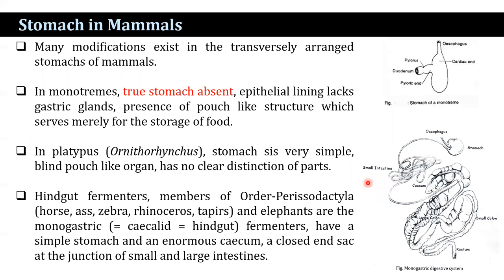Among mammals, many modifications exist in the transversely arranged stomachs. In monotremes, a true stomach is absent; the epithelial lining lacks gastric glands and a pouch-like structure serves merely for food storage. In the platypus, the stomach is a very simple blind pouch-like organ with no clear distinction of regions. Hindgut fermenters of the order Perissodactyla, such as horses, asses, zebras, rhinoceroses, and elephants, are monogastric with a simple stomach but an enormous cecum at the junction of the small and large intestine.